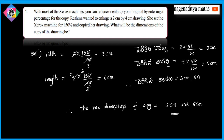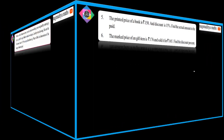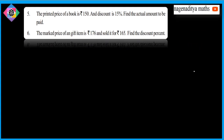Next problem, fifth one solution. The printed price of a book is 150 rupees and the discount is 15%. Find the actual amount to be paid.